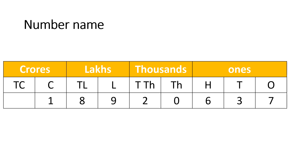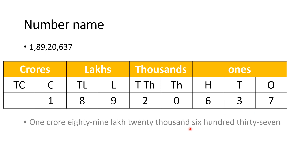A number is written in the Indian place value chart. We can observe that 7 is at the ones place, 3 is at the tens place, 6 is at the hundreds place, 0 is at the thousands place, 2 is at the ten thousands place, 9 is at the lakhs place, 8 is at the ten lakhs place, and 1 is at the crores place. Reading from left with period names: 1 crore, 89 lakh, 20,637. So this is your number name: 1 crore, 89 lakh, 20,637.